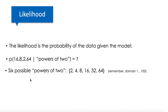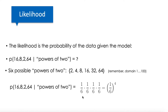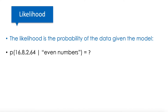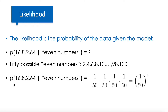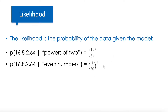Imagine we want to calculate the probability of the data given the model, which is exactly the likelihood. We have six possible powers of two within our domain — from one to a hundred, just 2, 4, 8, 16, 32, and 64. So the probability of those numbers given the powers-of-two model is going to be one divided by six, four times. Similarly, if we calculate the probability of our data given the even numbers model, we know there are 50 possible even numbers, so the probability is one divided by 50, four times. Comparing both, one divided by six to the power of four is greater than one divided by 50 to the power of four — that's why we choose that model.